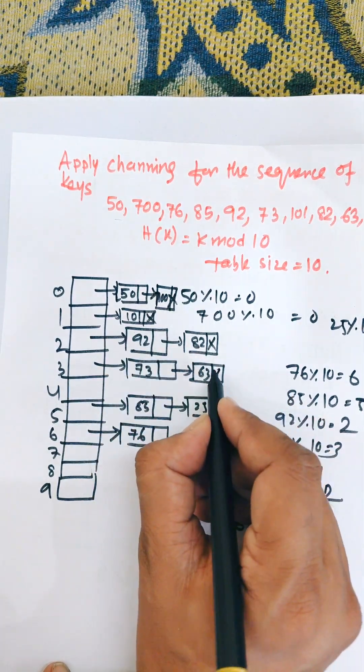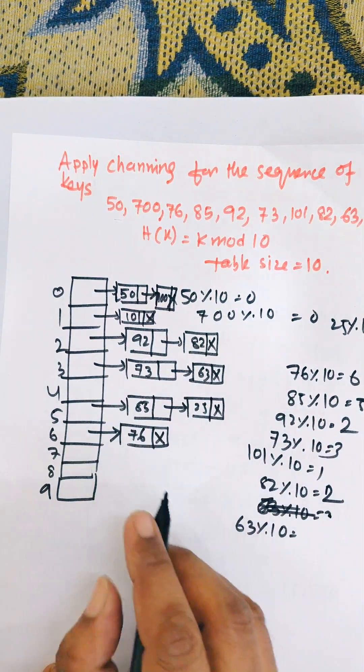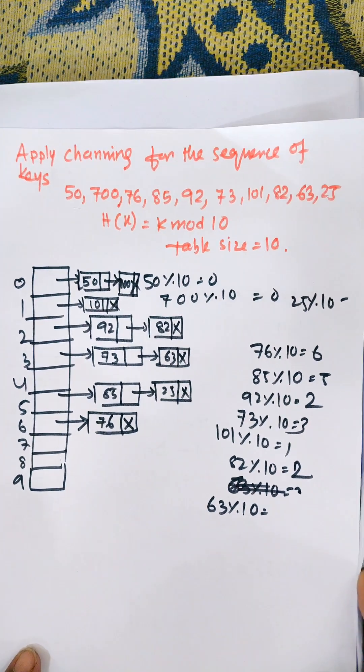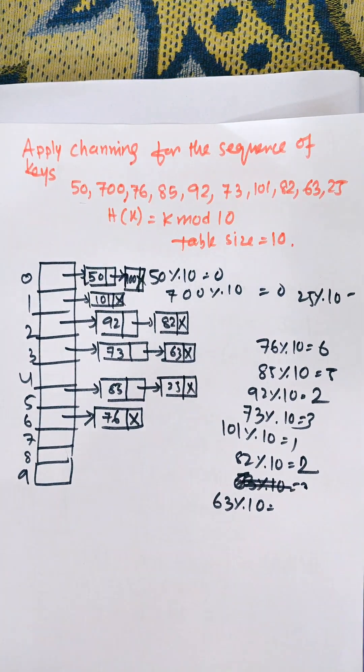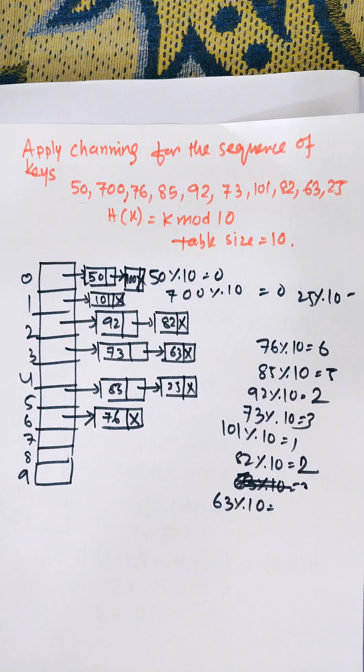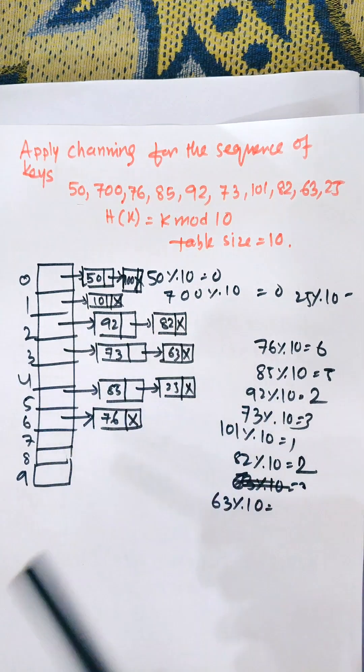So this is known as the chaining method. Chaining is one of the best collision resolution techniques in hashing. If there is any collision for more than one element after calculating the hash value, then for the same key we will store those elements in the same linked list. For the same key like 82 and 92, we need to store these elements in the same linked list.